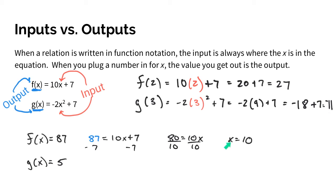So here I have found the input of 10 that gives you an output of 87. Same goes for the g(x) function, so as we set that up, you have 5 equals negative 2x squared plus 7. Same idea, 5 is the output, so that goes here. I'm looking for the input of x, so you just solve this algebraically.